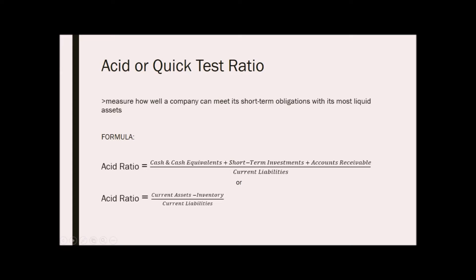Next up is the acid or quick test ratio. The purpose of this is to measure how well a company can meet its short-term debts with its liquid assets. Remember, liquid assets are those that can be quickly turned into cash. The formula for calculating this is cash and cash equivalents plus short-term investments plus accounts receivable all over current liabilities or current assets less inventory all over current liabilities. We omit inventory in the current assets because inventory often takes a longer amount of time to turn into cash.